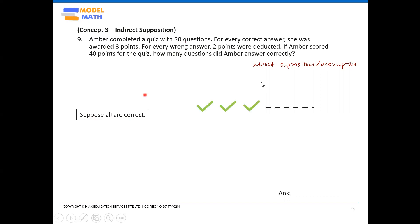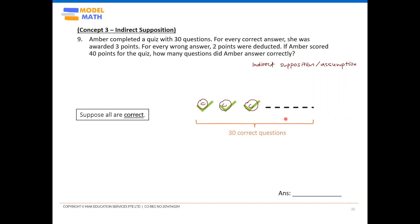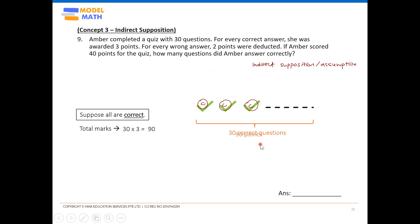Now I'm going to draw a diagram. I won't draw all 30 questions — just draw two or three, using 'C' in a circle to indicate correct answers, then dot-dot-dot to represent the remaining questions. All 30 are marked correct because we imagine all are correct. From these 30 correct questions, we find the total score: every correct answer is awarded three points, so 30 times 3 equals 90 points.